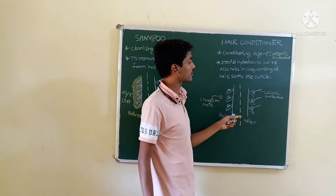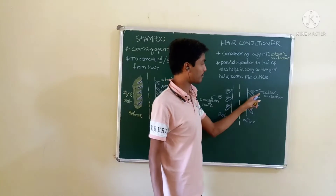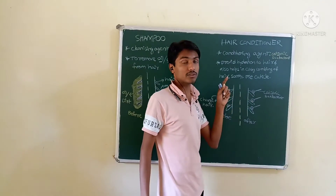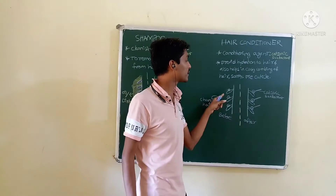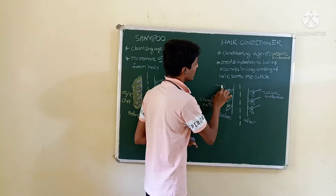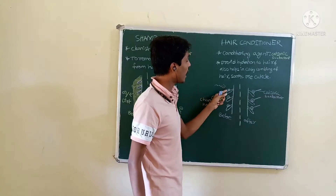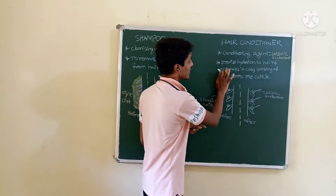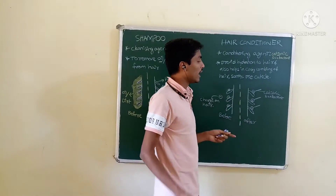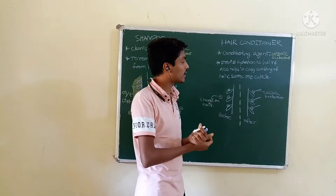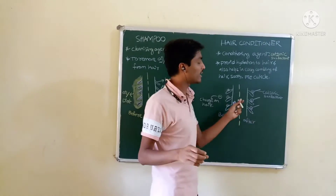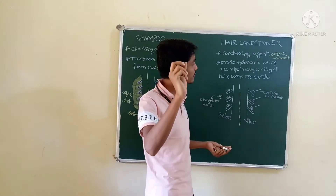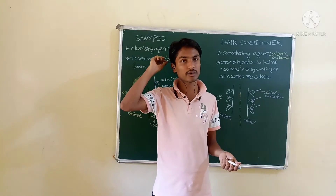Negative charge is present on the hair, so when you apply the hair conditioner, this negative charge will attract the positive charge of the cationic surfactant. The cationic surfactant will deposit on the hair. Anionic surfactant will not deposit on the hair due to repulsion — only cationic surfactant deposits, and this provides hydration to the hair.